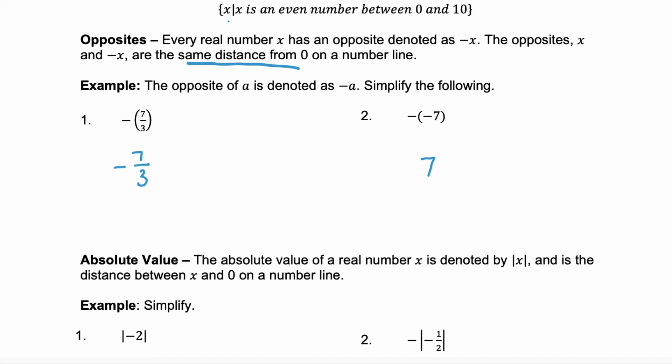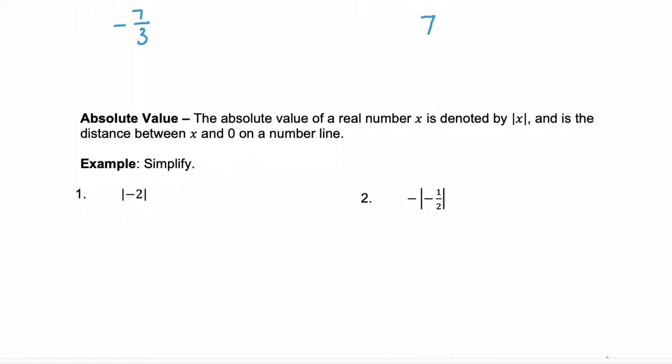Now notice that opposites we said the same distance from 0 on a number line. This helps us explain what absolute value means. The absolute value which is denoted with these two vertical bars. The absolute value of real number is the distance between that value x and 0 on a number line.